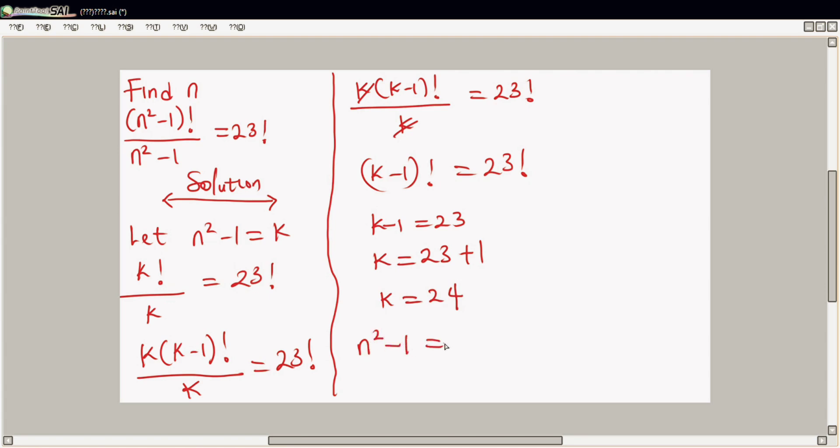Equal to this 24, so n² equal to 24 plus 1. So n² equal to 25. Then n is equal to square root of 25, therefore your n is equal to plus or minus 5.